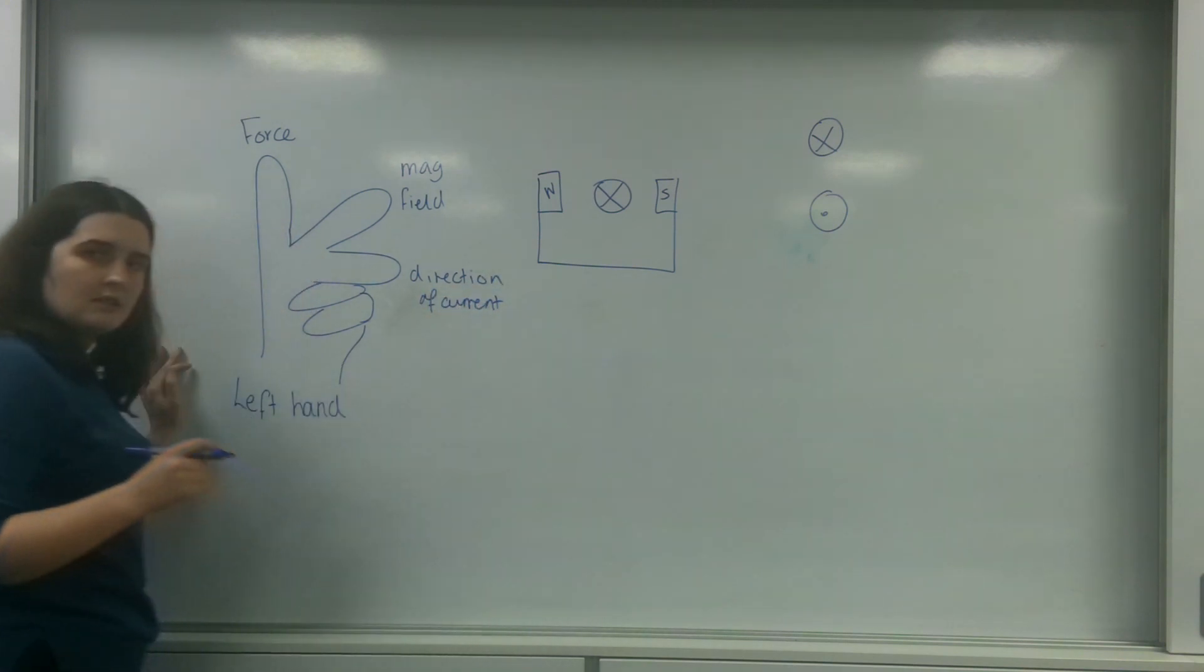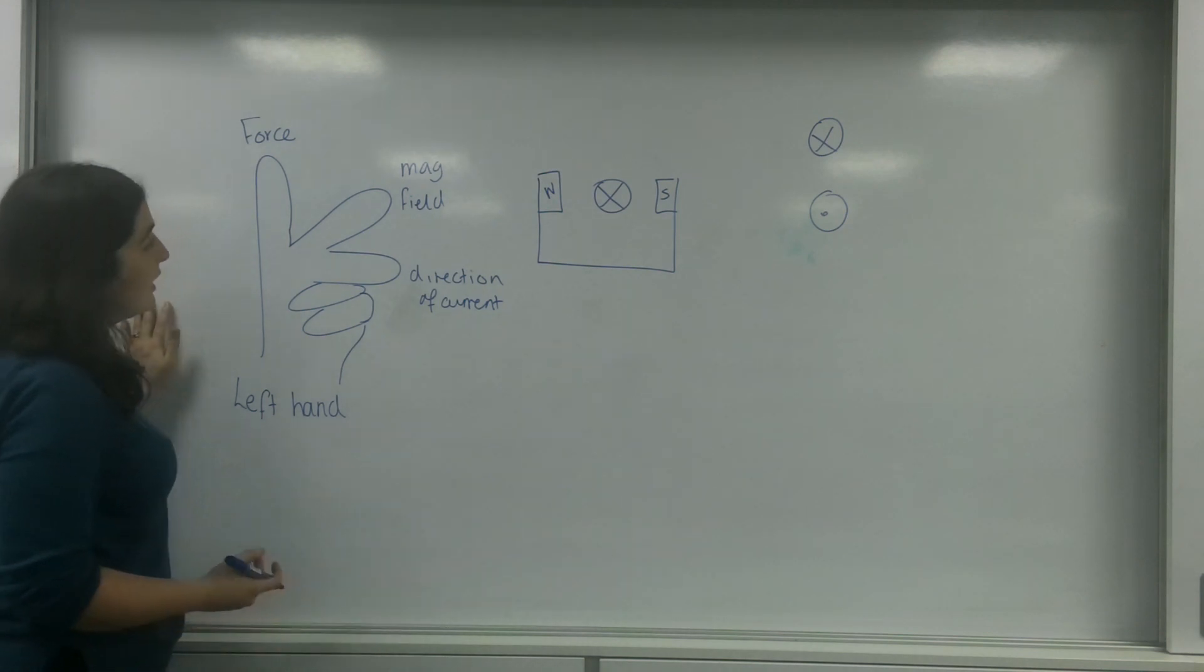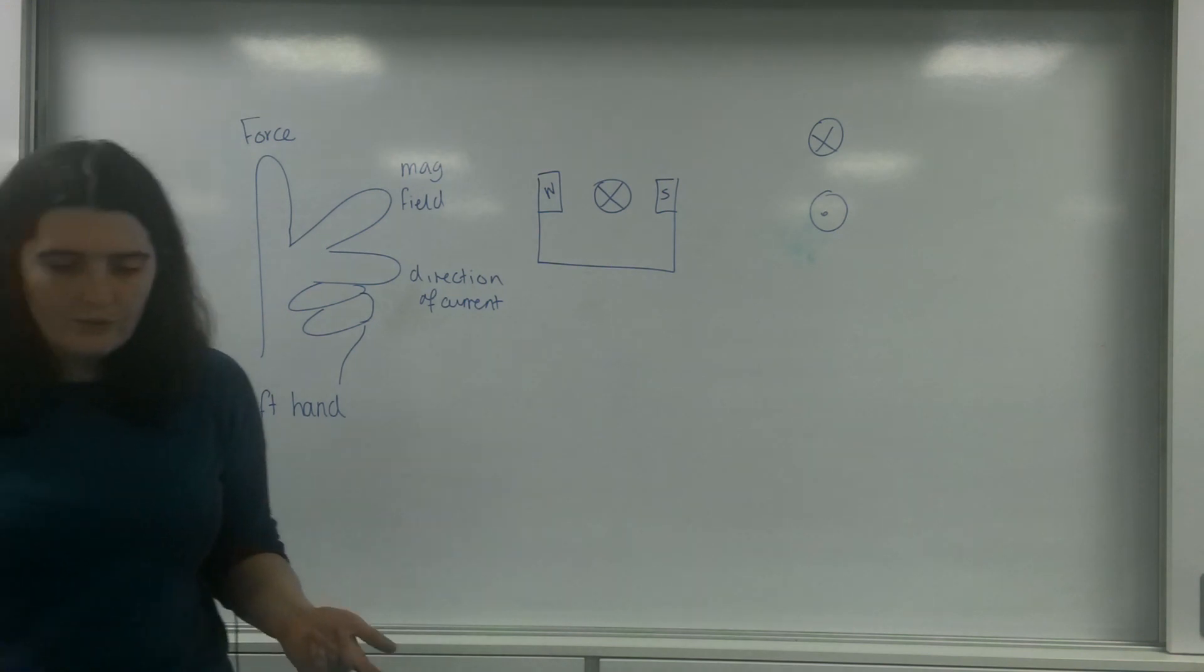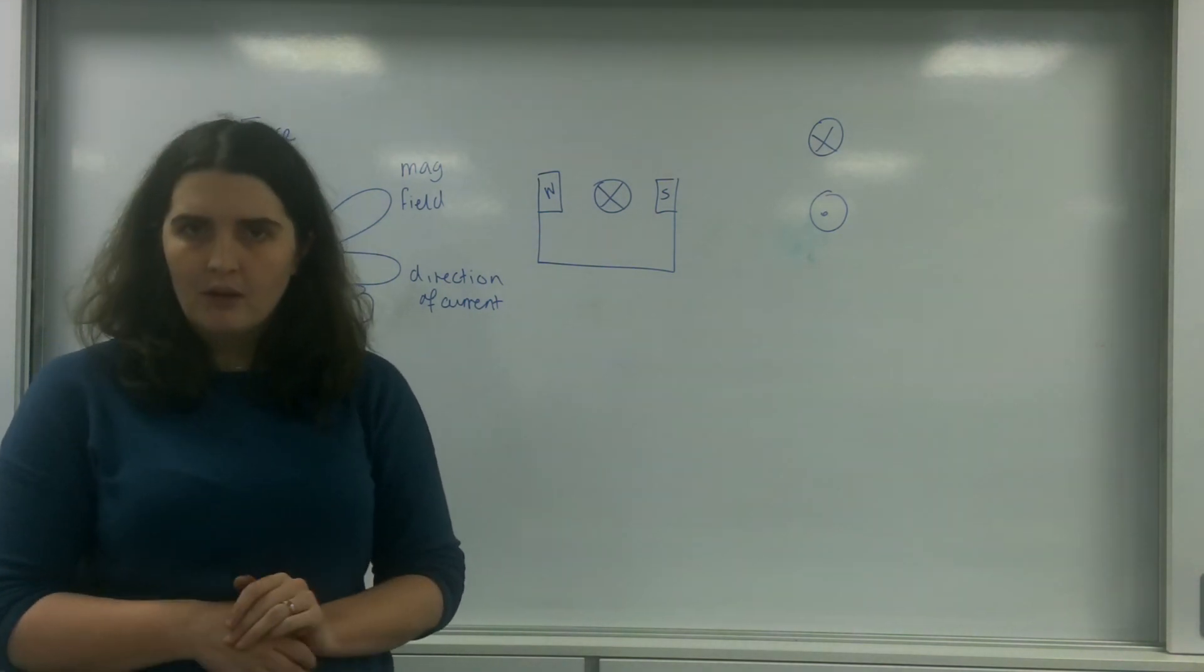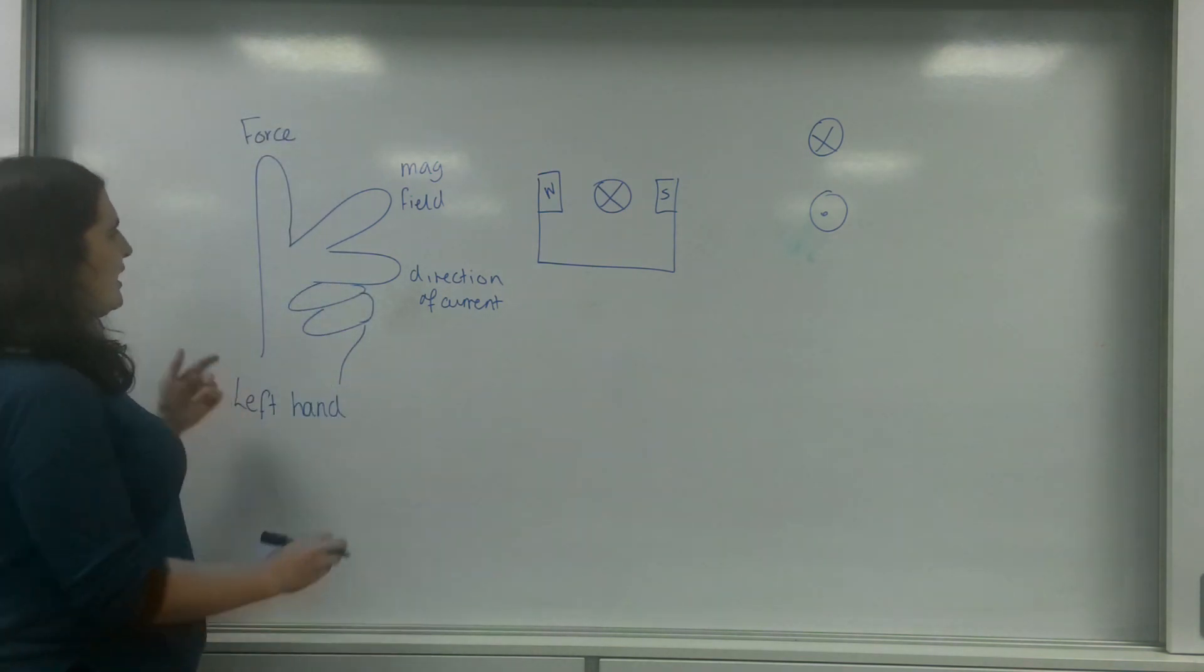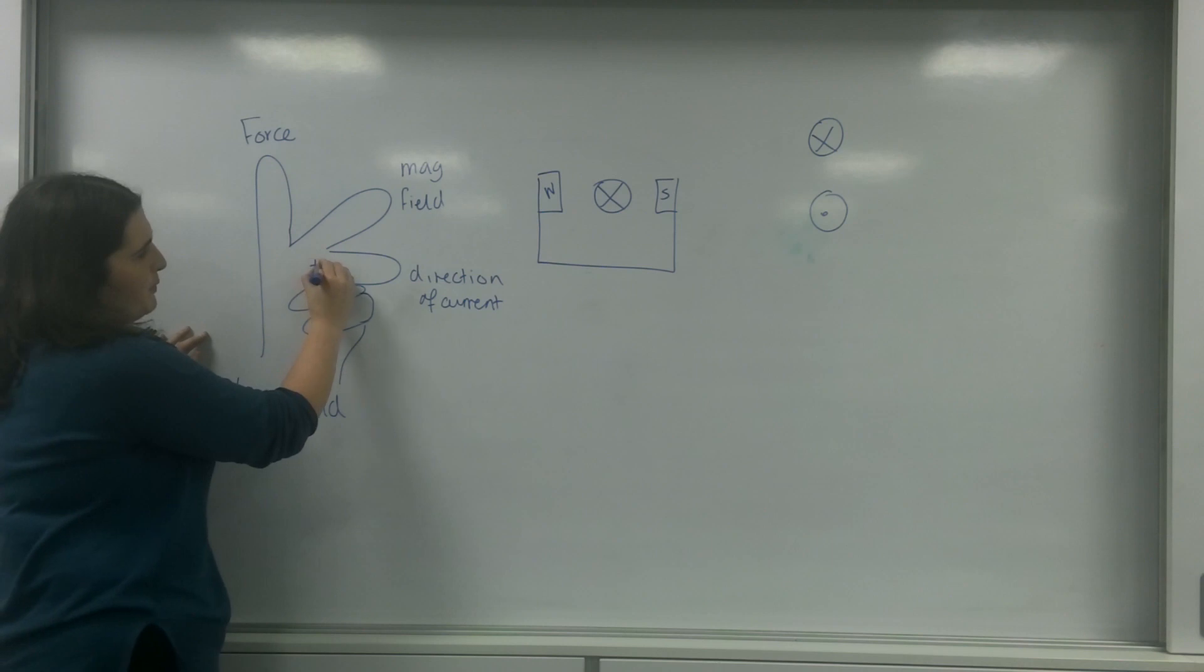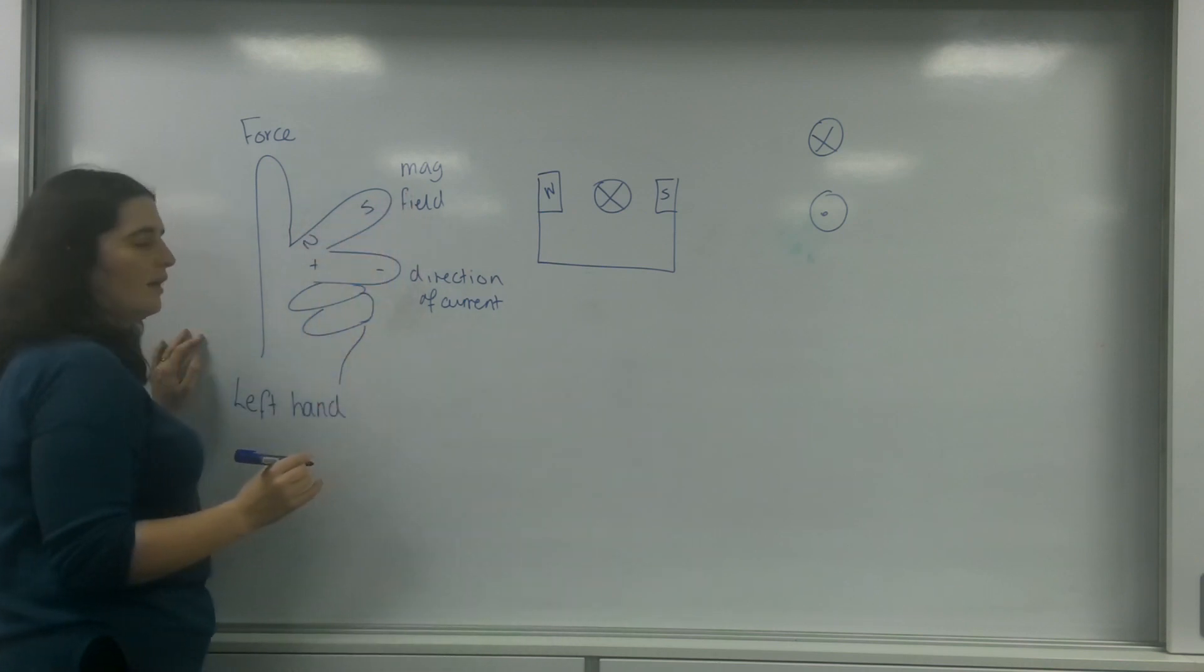And to make you aware, this is the direction of the current, not the real current, the conventional current. And so what I want to point to you now is something that you can do while in the exam that might help you. What you can actually do is write over your fingers. You can write that at the knuckle, this is positive to negative. And you can write that this is north to south.